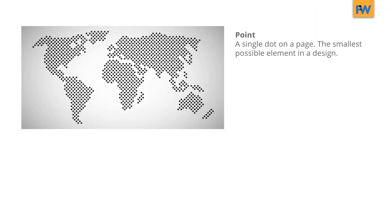Point. A point is a single dot on a page — it is the smallest possible element in a design. When you use points in a design, it's important to remember the rule of closure: the viewer's brain will connect the actual points, making a solid figure. Here, even though it's just a series of dots, you can tell that this design is a representation of a world map.